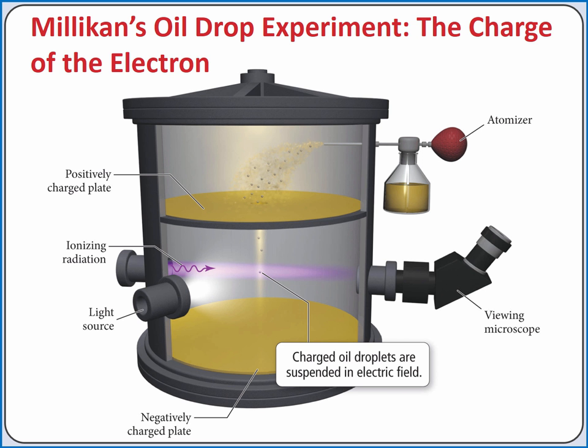Robert Millikan's oil drop experiment was used to calculate the elementary charge of the electron. In this experiment, charged oil droplets are suspended using an externally applied electric field. The mass of the oil droplet can be calculated and used to determine the charge on the oil droplet. That charge has to be a multiple of the elementary charge of the electron. For example, an oil droplet might have 10 extra electrons on it, then another might have 50. If you continue this process with lots of oil droplets, you can calculate the elementary charge of the electron.